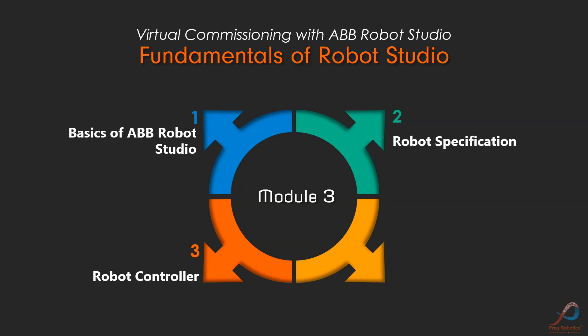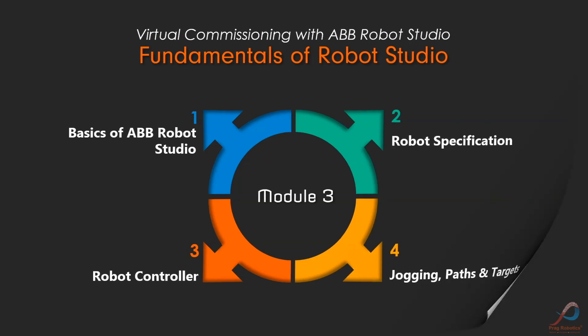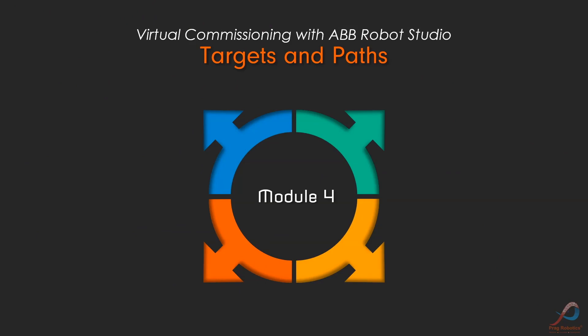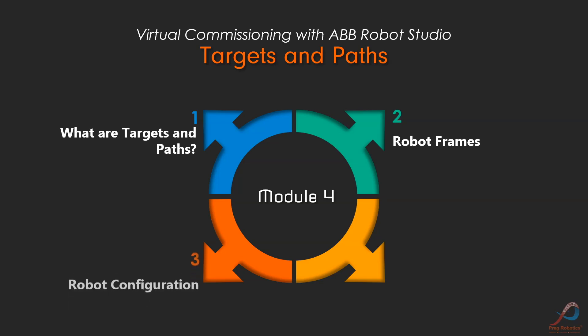Finally, summing up the basics, we will try robot jogging. In the fourth module, we will look into targets and paths. Targets and paths are important in robot motion planning. We will work on some fundamental physics that govern the motion of the robot. We will look into robot frames and robot configurations.